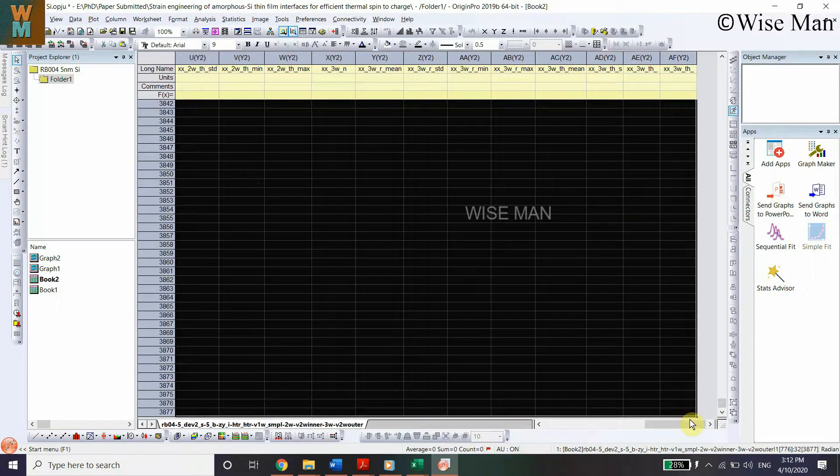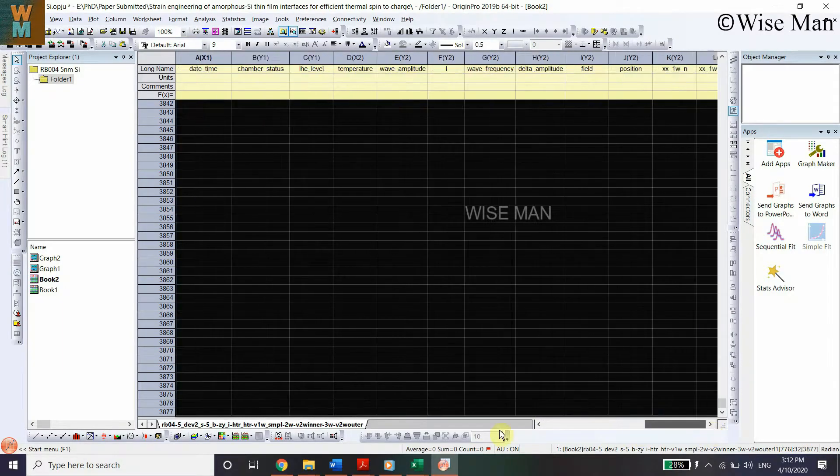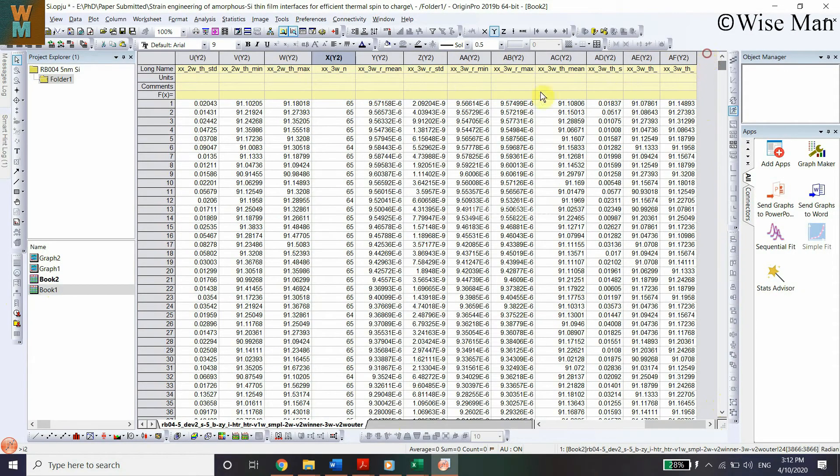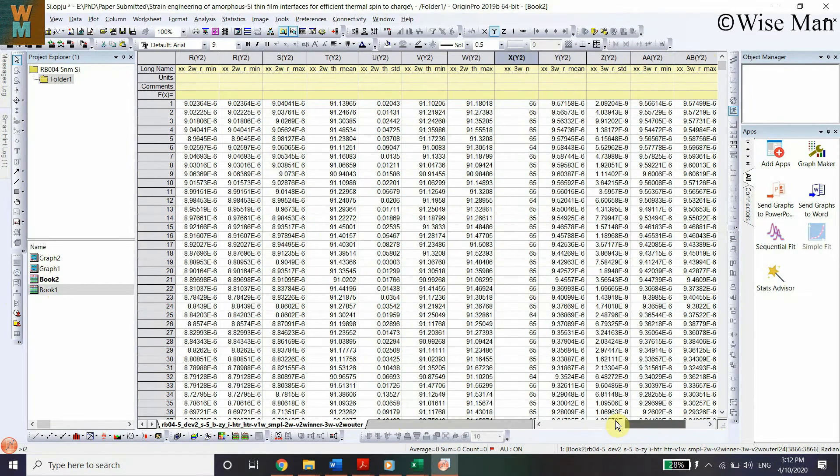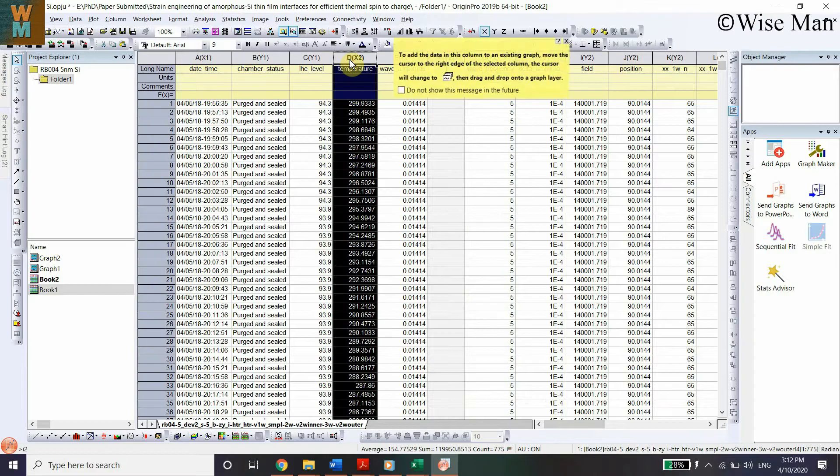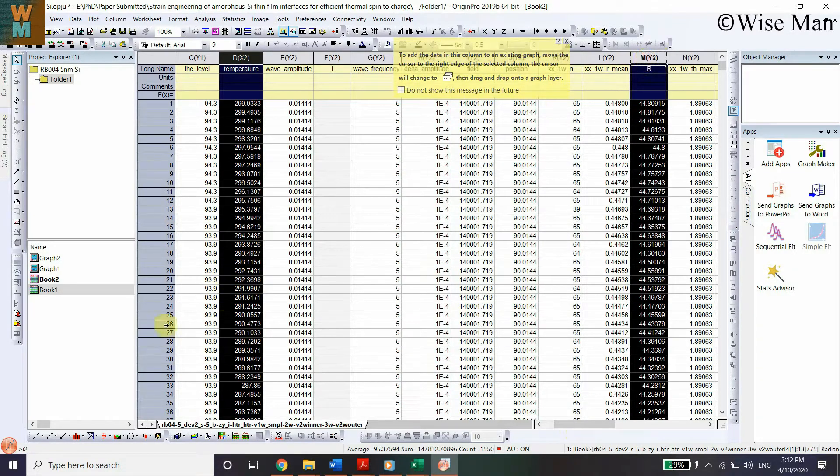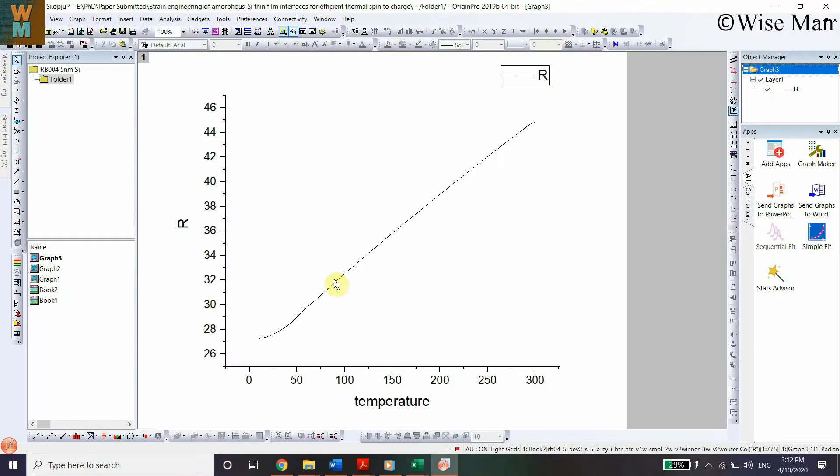Let me plot a graph. This is temperature and I'm going to plot this with respect to some resistance. Now as you can see the font is Arial.